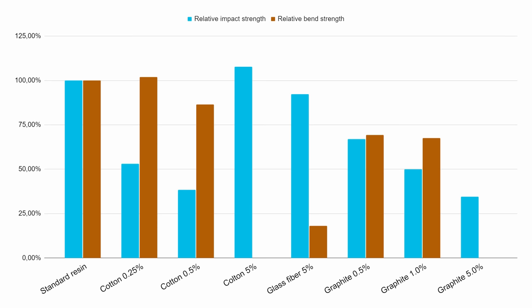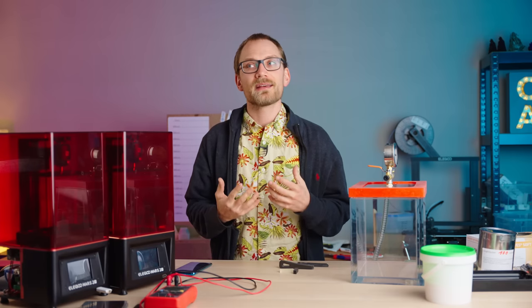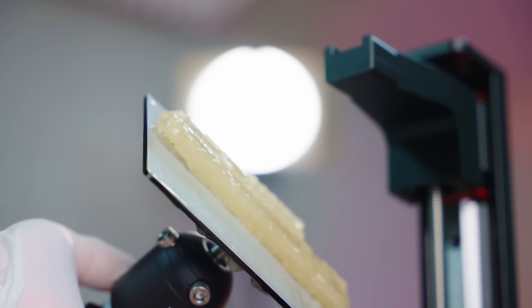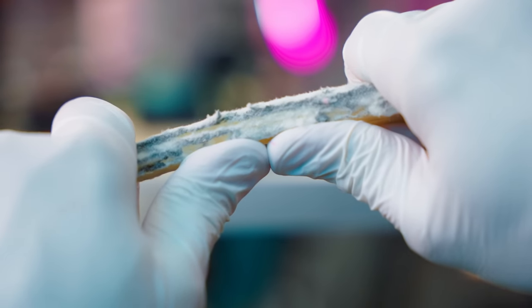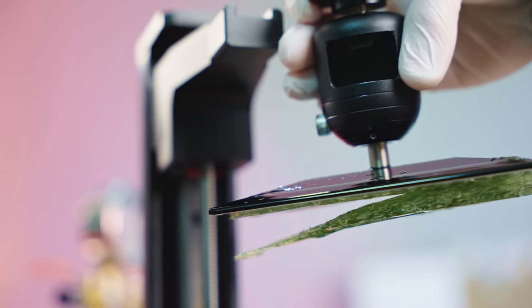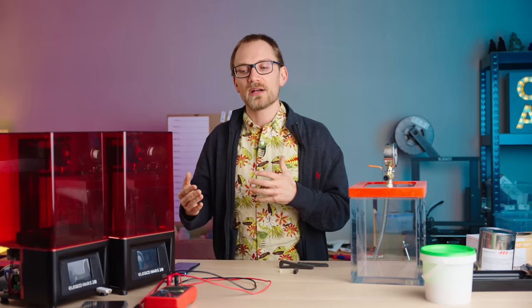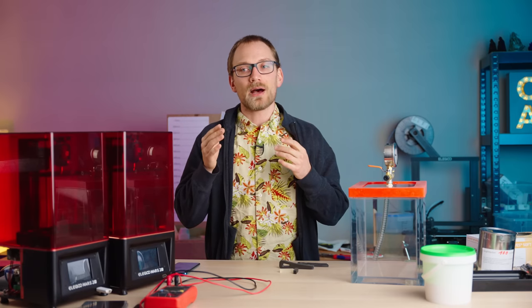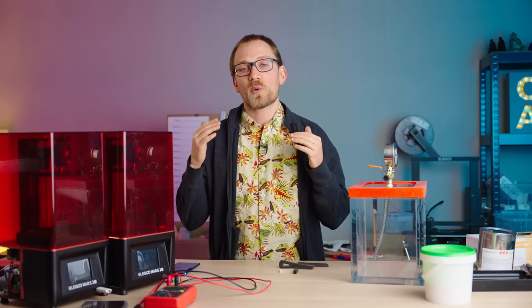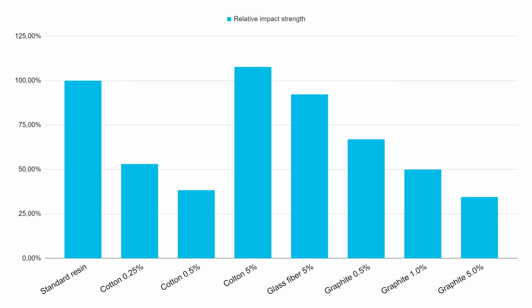And here is the result. Now for the parts with the highest amount of fibers or additives added in, it was already pretty clear that these wouldn't have a massive improvement in strength, if at all, because they were already kind of falling apart right out of the printer. With this much fiber added in, the layers didn't really bond all that well in the printer anymore. So those were pretty obvious. But still, none of these tests actually showed a significant improvement over just regular old plain resin.